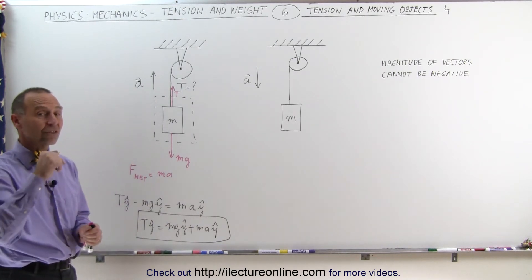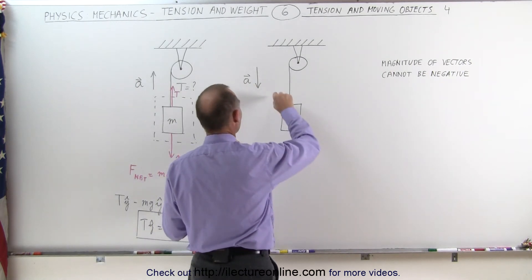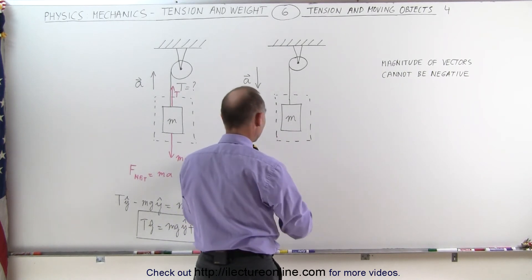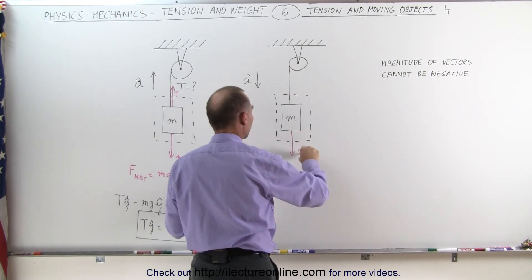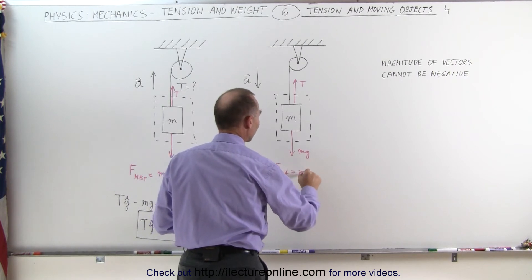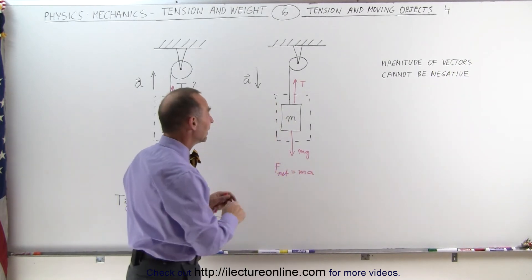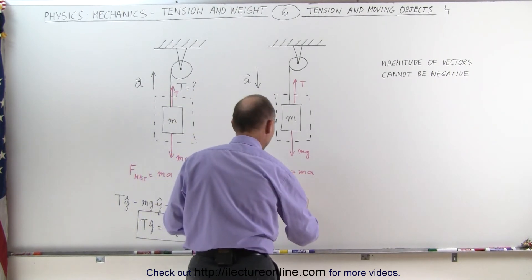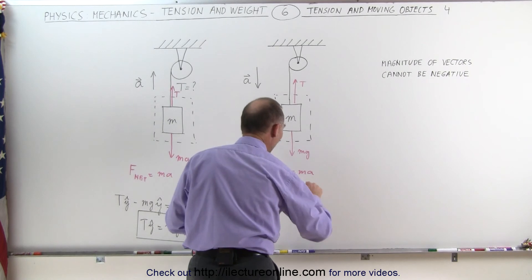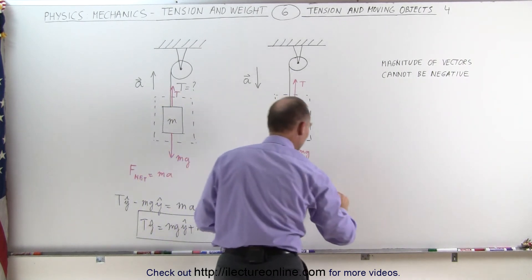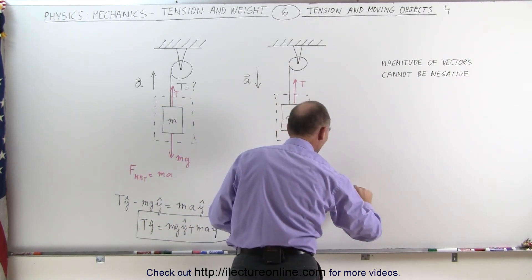Now what does it look like when the object is accelerating downward? Again we draw a free body diagram, identify all the forces, and again you will find the same two forces: the weight of the object pulling downward and the tension pulling upward. The net force on the object equals mass times acceleration in vector form. We have a positive T minus the weight in the y-direction, which is in the negative y-direction, equal to mass times acceleration — but since acceleration is in the negative direction, it would be minus ma in the y-direction.